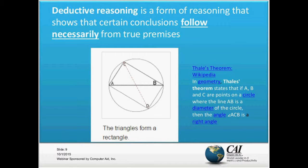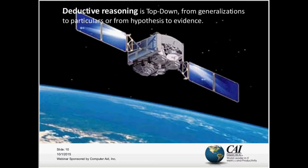Deductive reasoning can also be used in daily life for things where conclusions follow necessarily from true premises. It really is a top-down reasoning process — it goes from generalizations to particulars. Another important way to look at it: it goes from hypothesis to evidence.